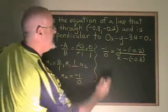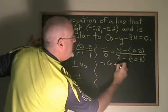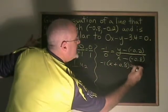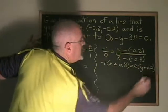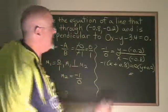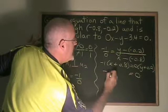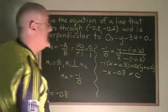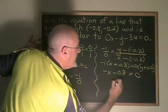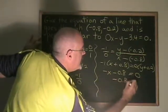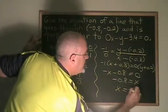Cross multiplying, I get negative 1 times x plus 0.8 is equal to 0 times y plus 0.2. Of course, 0 times anything is equal to 0, so the right side becomes 0. The left side becomes negative x minus 0.8 equals 0. Now, if I move that negative x to the other side, I will have negative 0.8 equals positive x, and I can write this backwards, x equals negative 0.8.